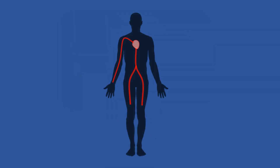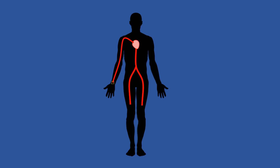During angioplasty, a needle is inserted into the radial artery, and after, a thin flexible tube called a catheter is inserted into the artery and is guided through the arterial system to reach the affected coronary artery, using an X-ray video.